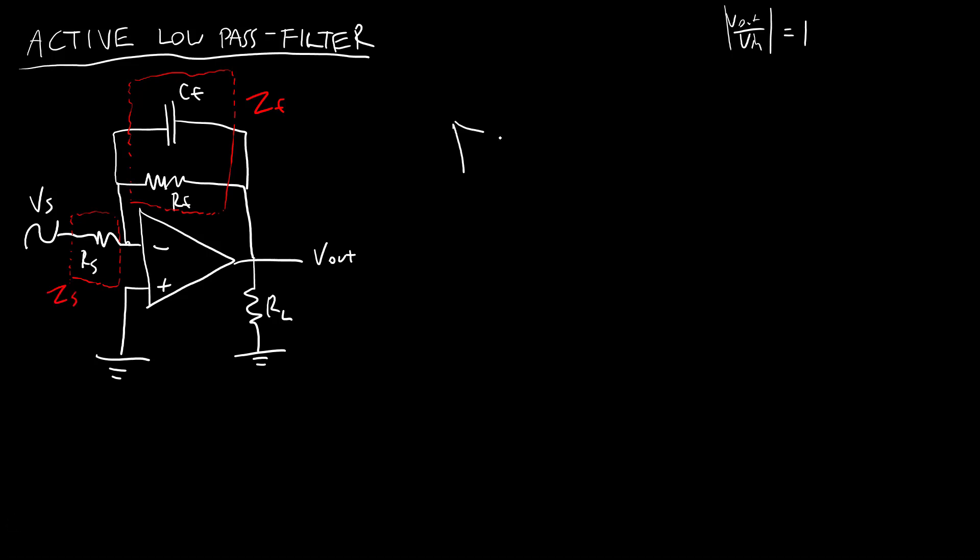And if we do that, and I redraw this circuit just using the impedances, where I have my non-inverting input tied to ground, I have my source impedance ZS, and my feedback impedance ZF, then we notice that this circuit pretty much just looks like an inverting amplifier, where I have Vout instead of resistor values. Now I have negative ZF over ZS times VN.